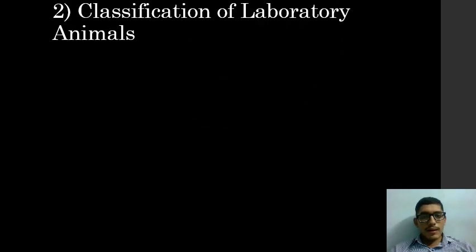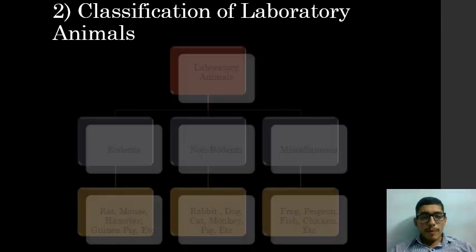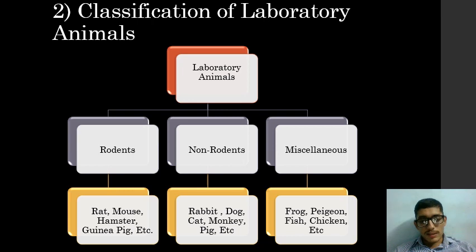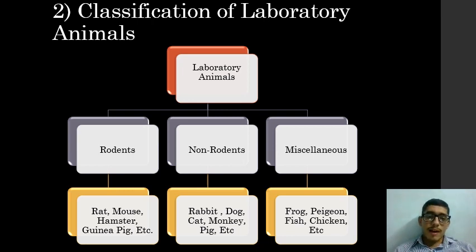The laboratory animals are classified into three types: rodents, non-rodents, and miscellaneous. Rodents are animals which have a single pair of incisors — the front teeth — which continuously grow in both the upper and lower jaws. Rodents are small animals with a robust body, small limbs, and a long tail. Some common examples of rodents are rat, mouse, hamster, guinea pig, etc.